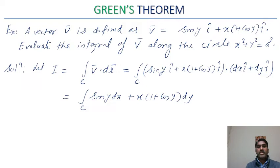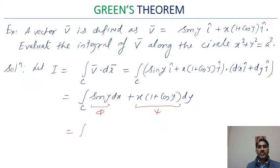Writing it out: v · dr = sin(y) dx + x(1 + cos y) dy. This integration is being taken on the XY plane. Because we need to use Green's theorem, we identify Φ = sin(y) and Ψ = x(1 + cos y) as our phi and psi functions.